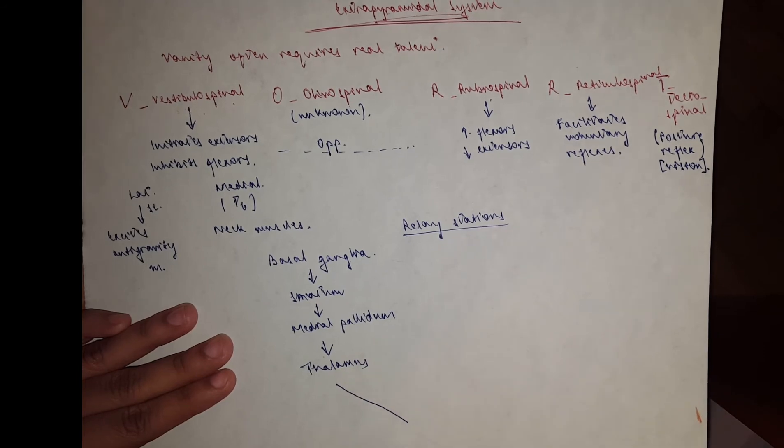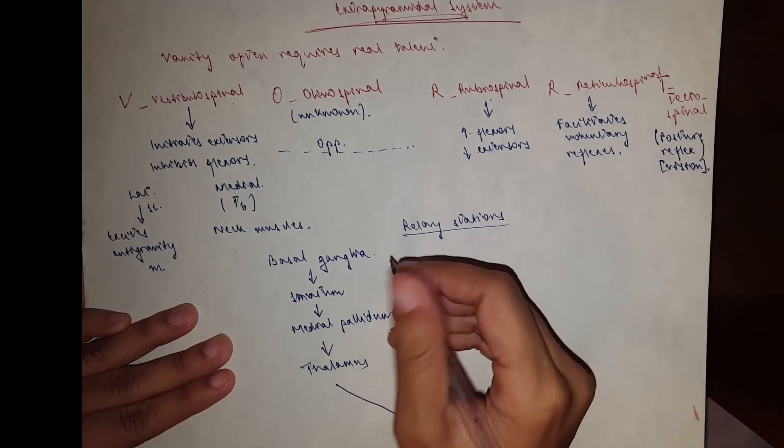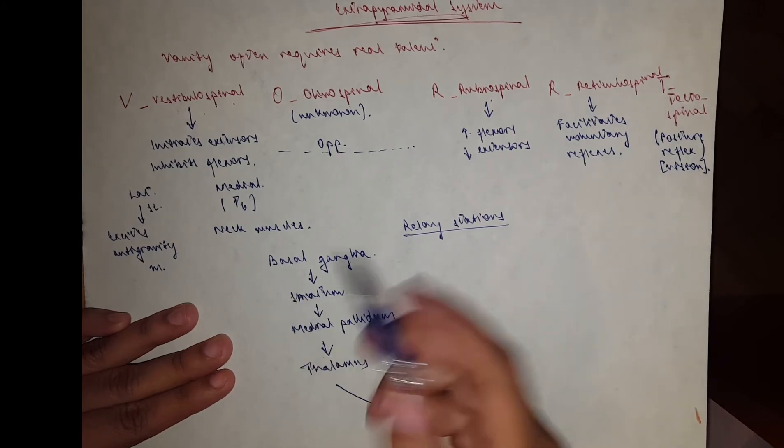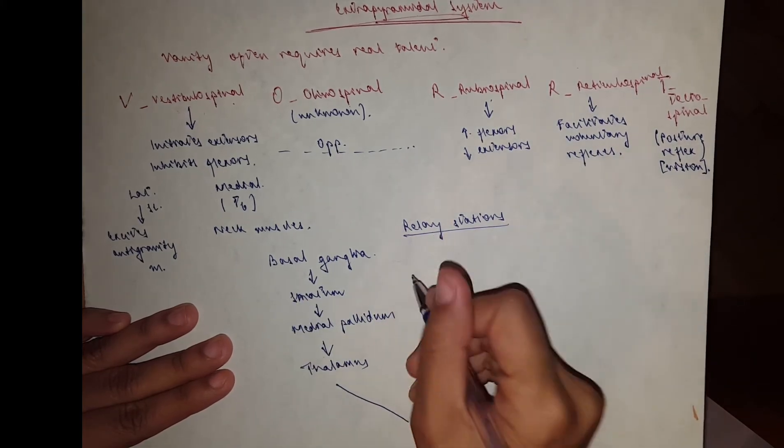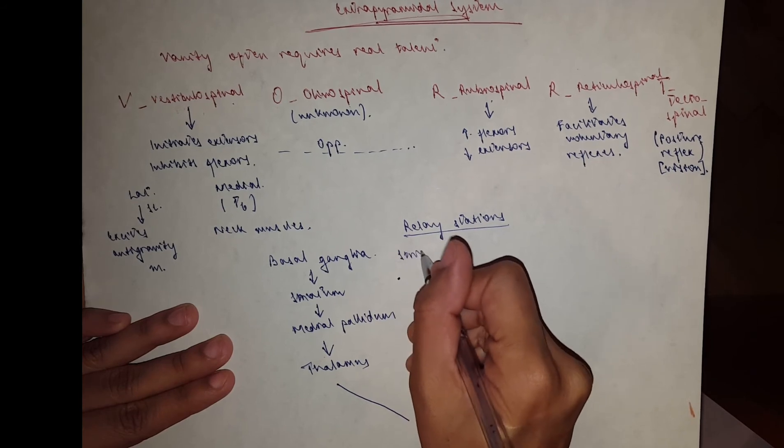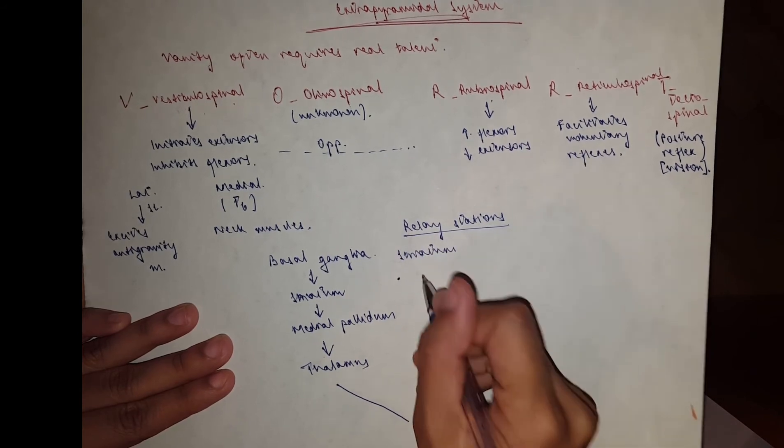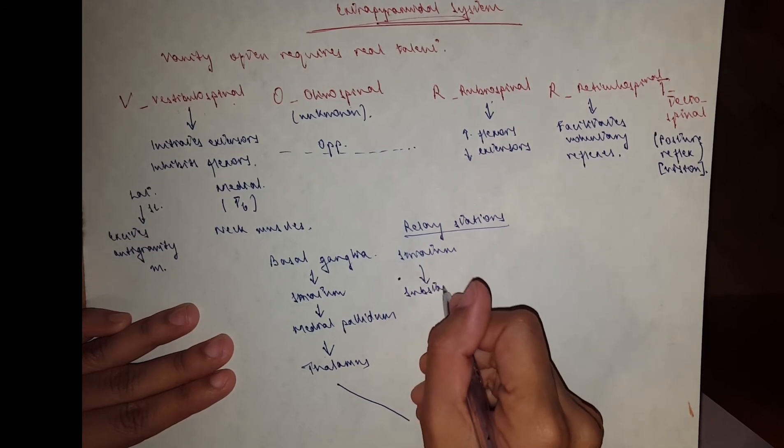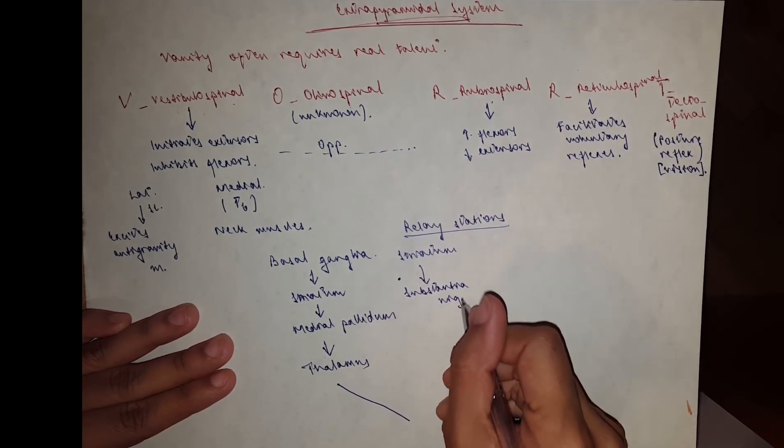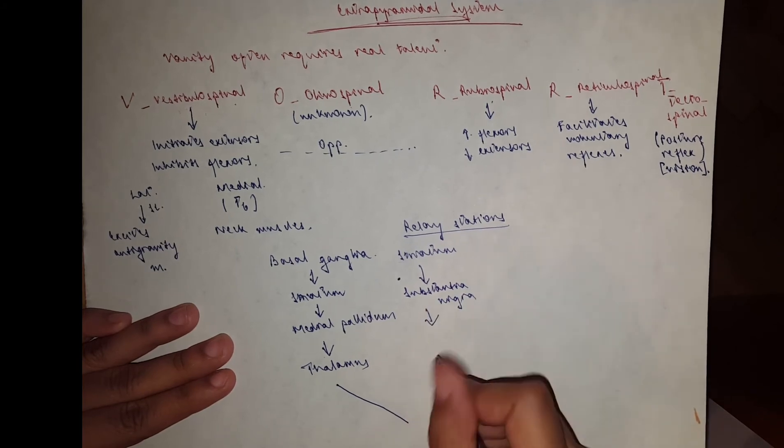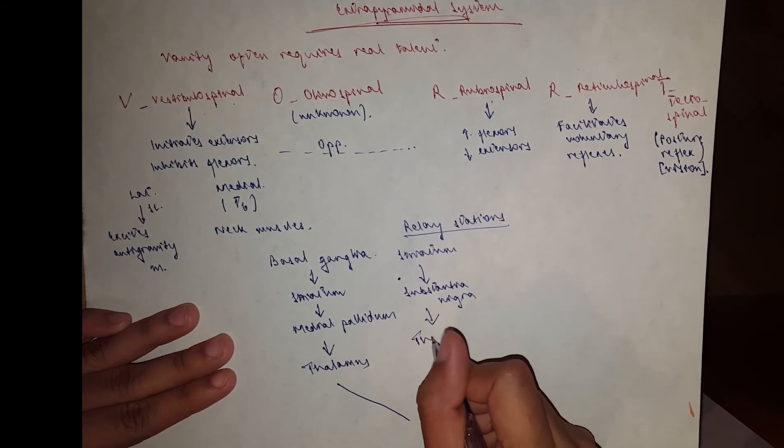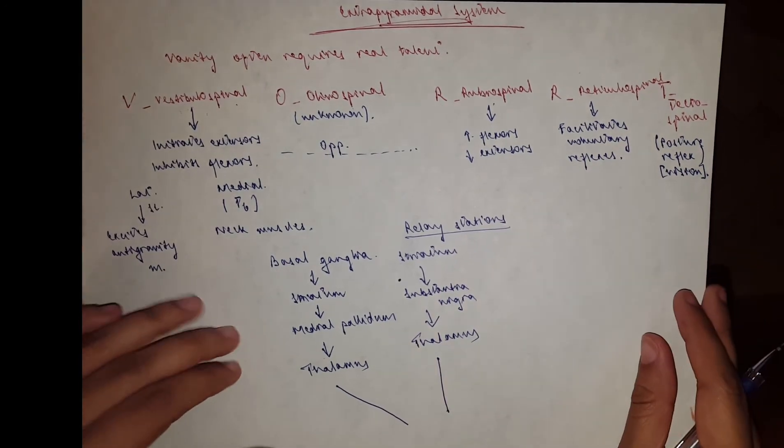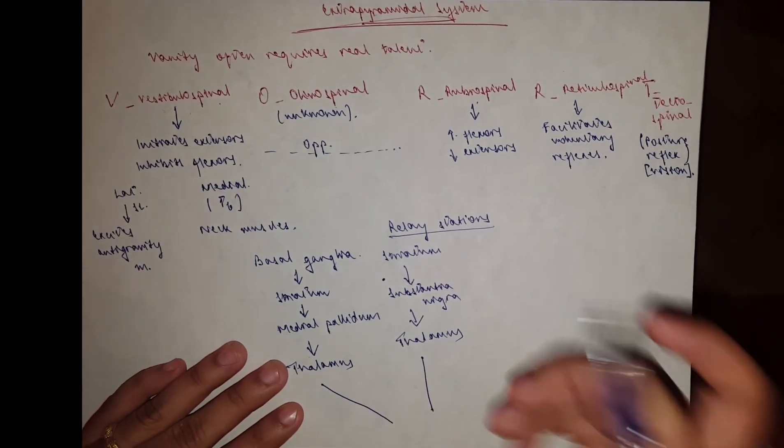Second, we've got the substantia nigra which is in the midbrain. It starts again from the striatum, then goes to the substantia nigra, then to the same ventral anterior nucleus of the thalamus, and finally terminates in the motor cortex.